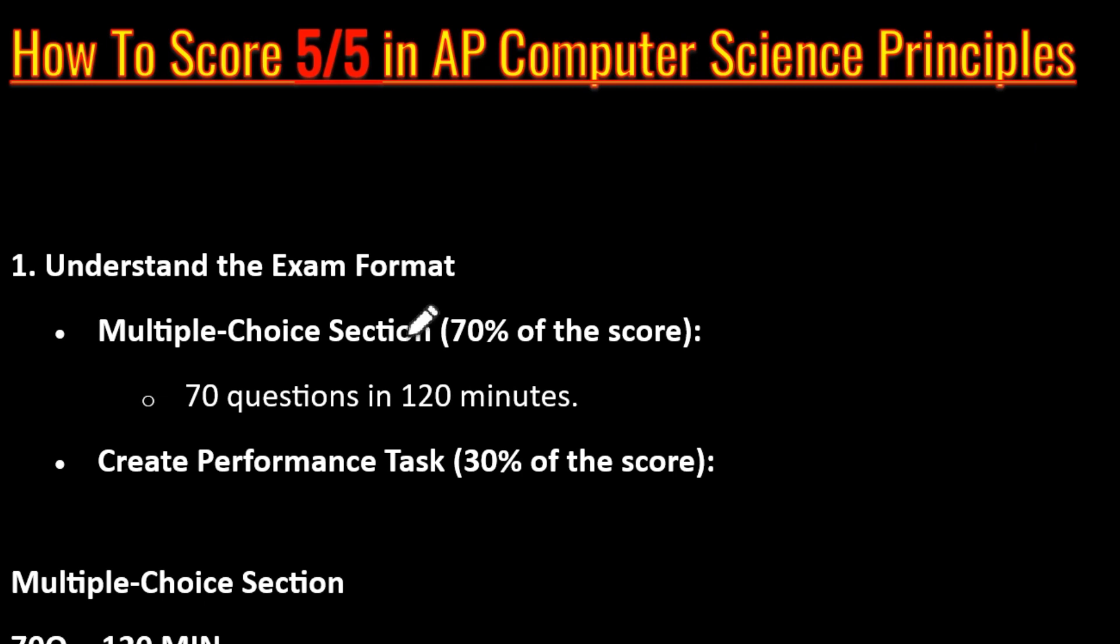First we need to understand the exam format. 70% of the score is multiple choice section in which you will be given a question and there will be options and you need to select the answer. There will be 70 questions in 120 minutes. And then you have a performance task which constitutes about 30% of the score. This is related to creating a project, creating a video and then writing description on it.